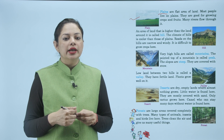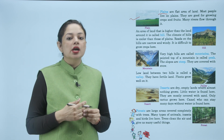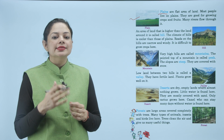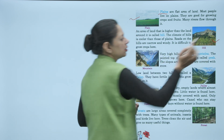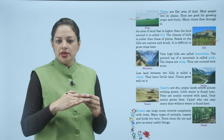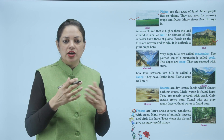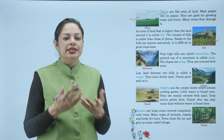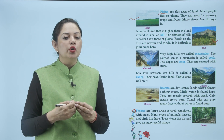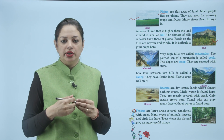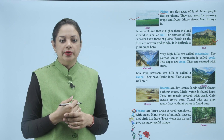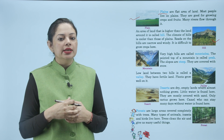An area of land that is higher than the land around it is called a hill. The climate of hills is cooler than those of plains. Roads on the hills are narrow and windy. It is difficult to grow crops here. Hill का जो climate है वो बहुत cool होता है, hills के roads बहुत narrow और windy होते हैं, और यहाँ crop grow करना बहुत मुश्किल होता है।